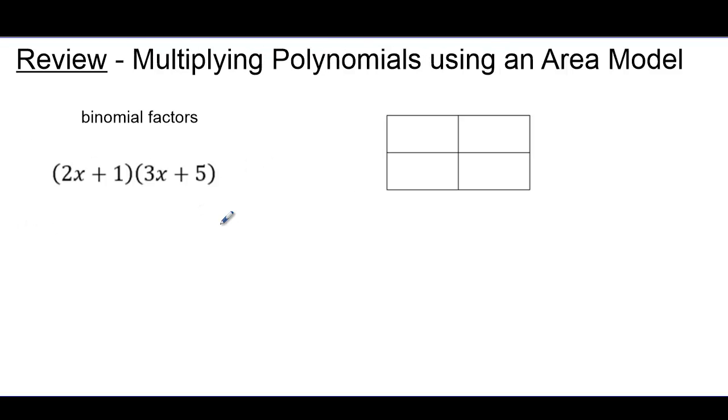Before we factor, we're going to review multiplying polynomials using the area model. Factoring is just the reverse of multiplying. Let's begin by noting we have two binomial factors, so these two multiplier polynomials each have two terms. And because we're multiplying two terms by two terms, our rectangular area model has to be a 2 by 2 rectangle.